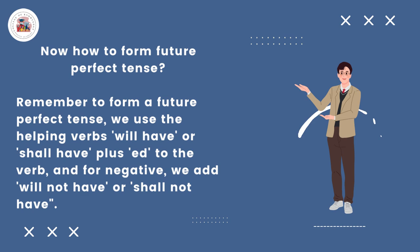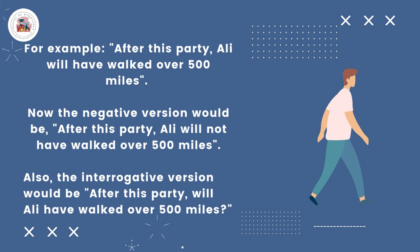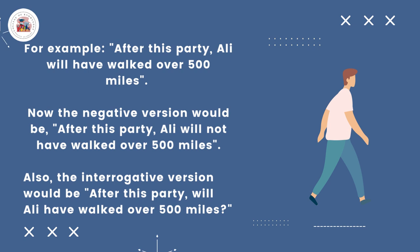For example: After this party, Ali will have walked over 500 miles. The negative version would be: After this party, Ali will not have walked over 500 miles. The interrogative version would be: After this party, will Ali have walked over 500 miles?